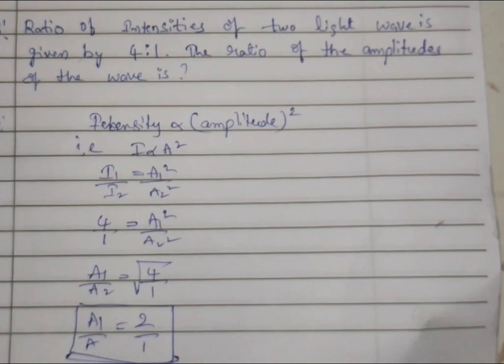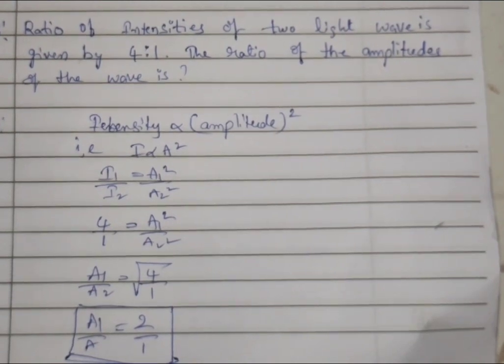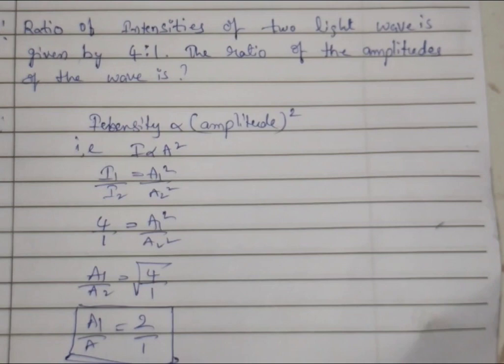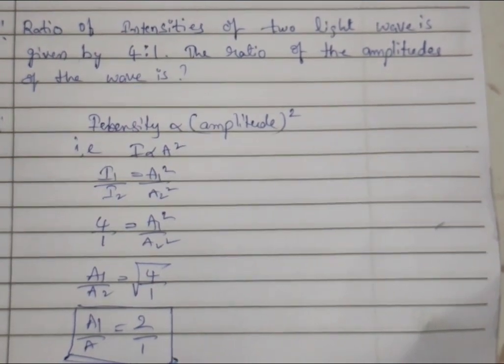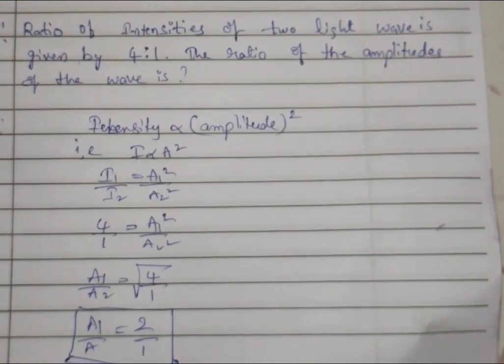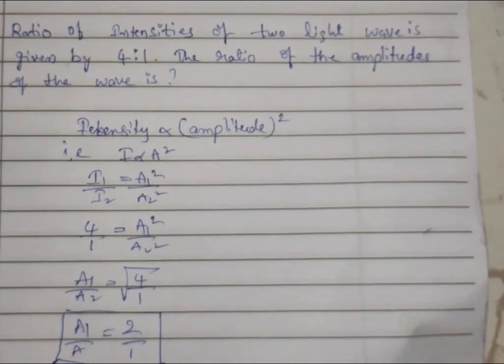Root 4 is equal to 2, and root 1 we can write as 1. So A₁ by A₂ is equal to 2 is to 1. So the correct answer is 2 is to 1. Thank you for watching my video.